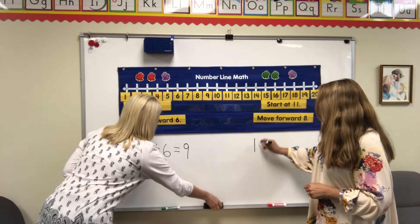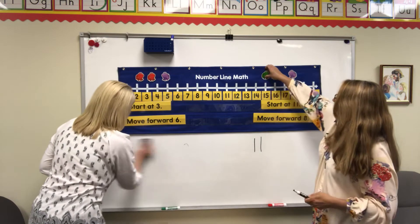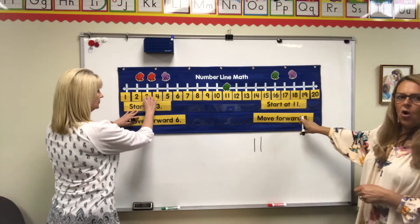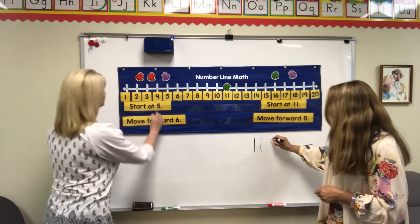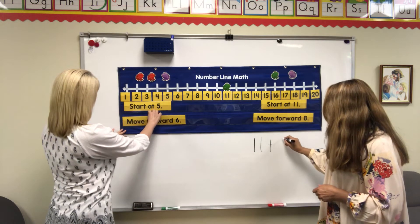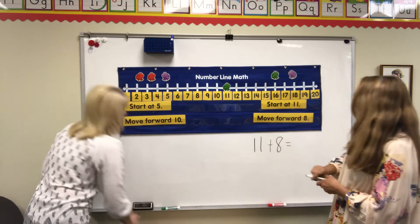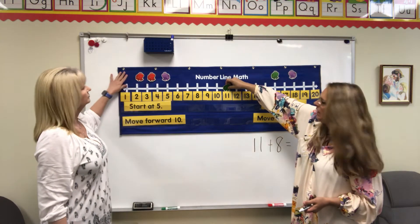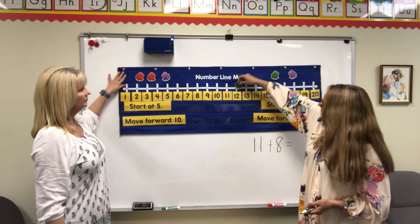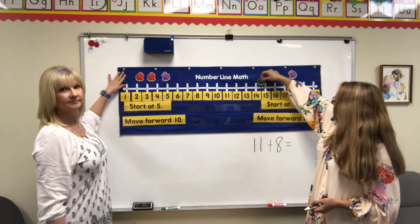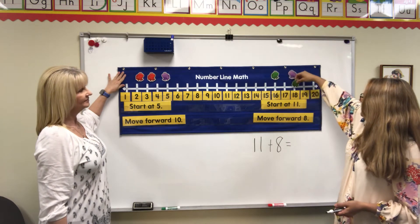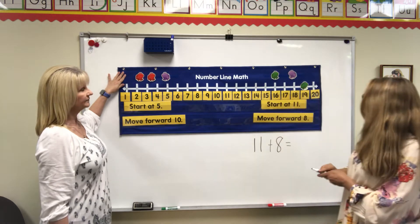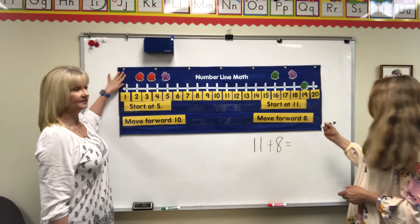My next one tells me I'm going to start at number 11, so I'll put my frog on number 11. It says move forward 8, so I'm going to add 8 to 11. Let's count together to see what we get: 1, 2, 3, 4, 5, 6, 7, 8. So 11 plus 8 equals 19!